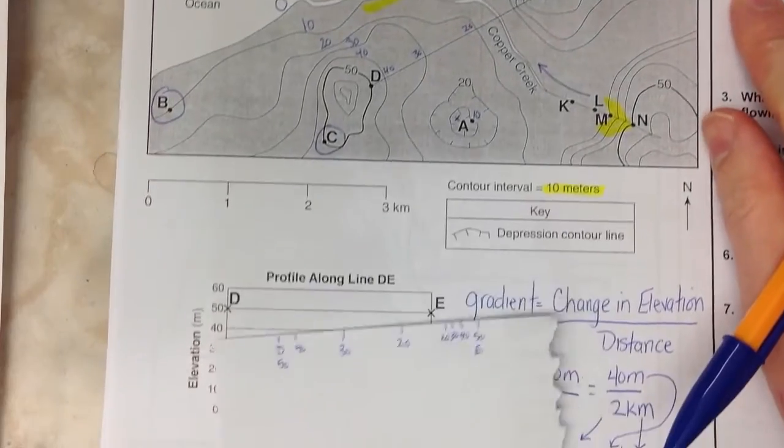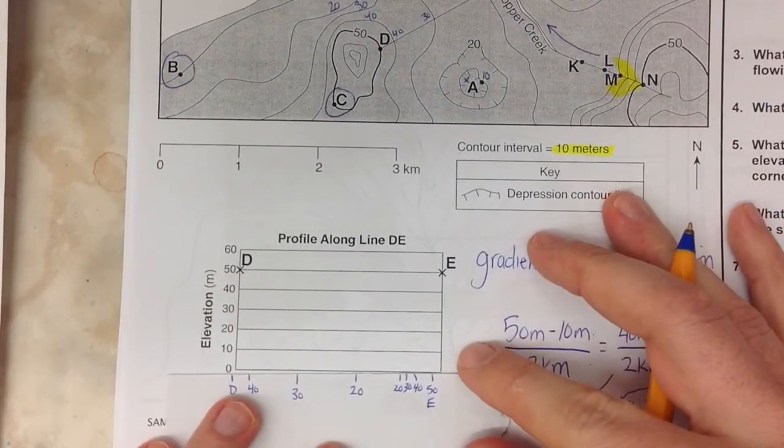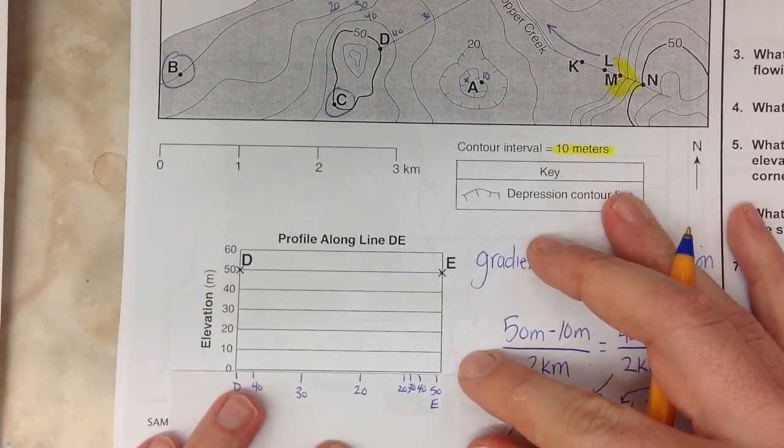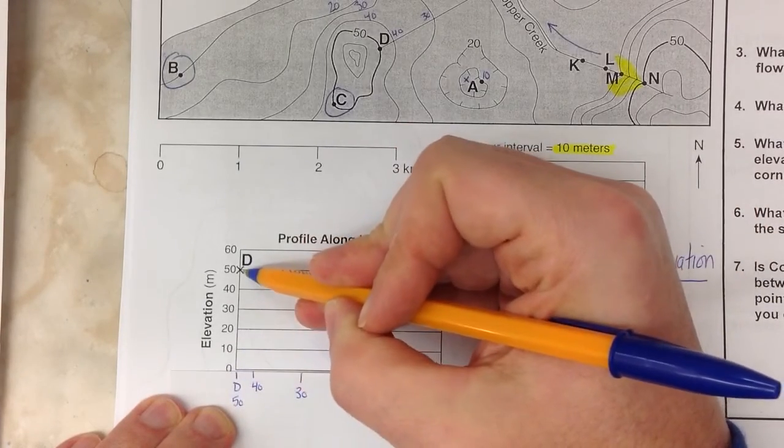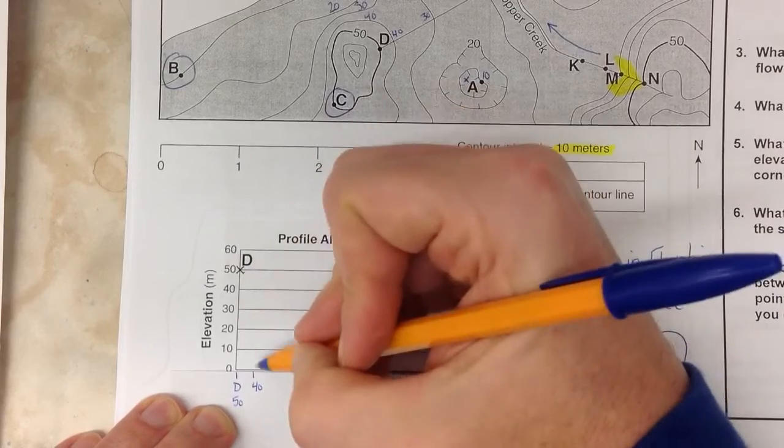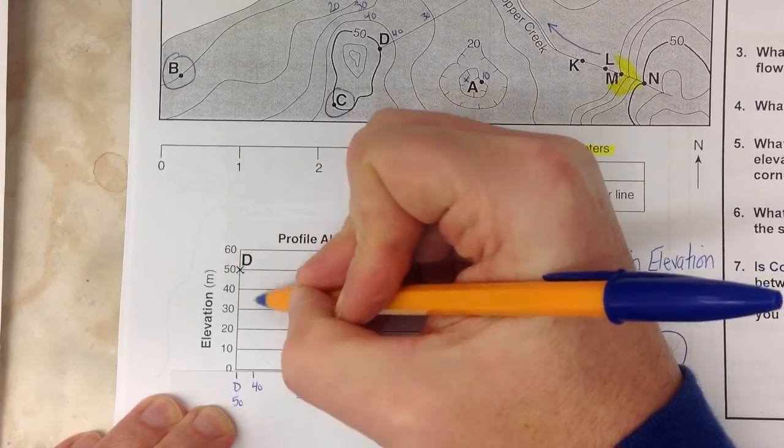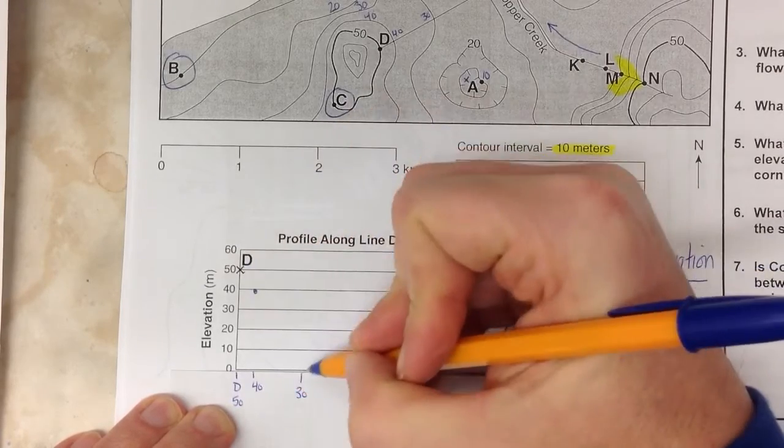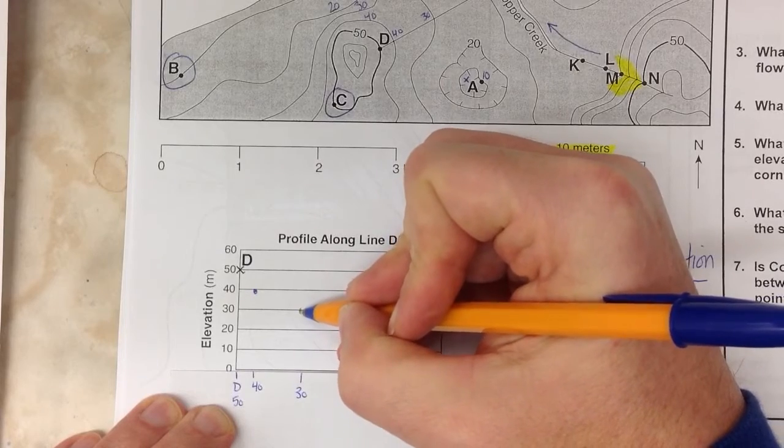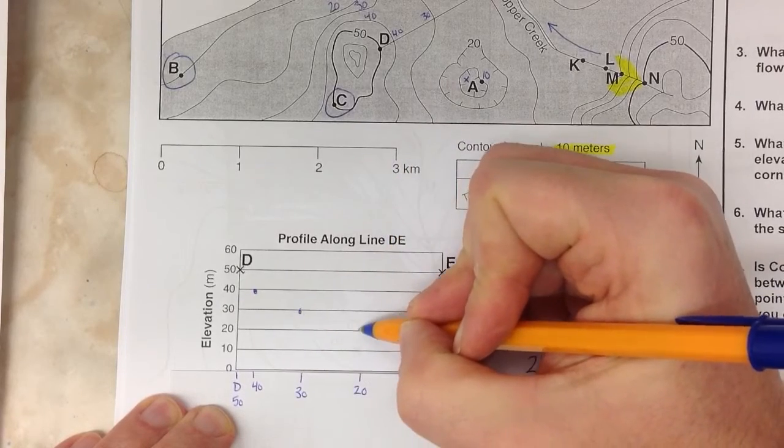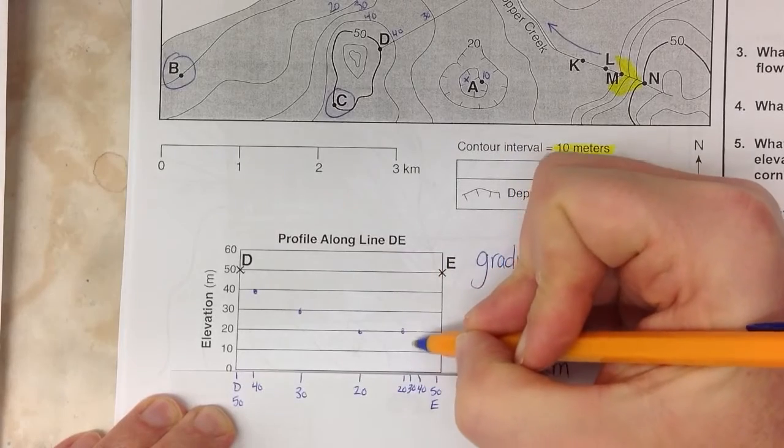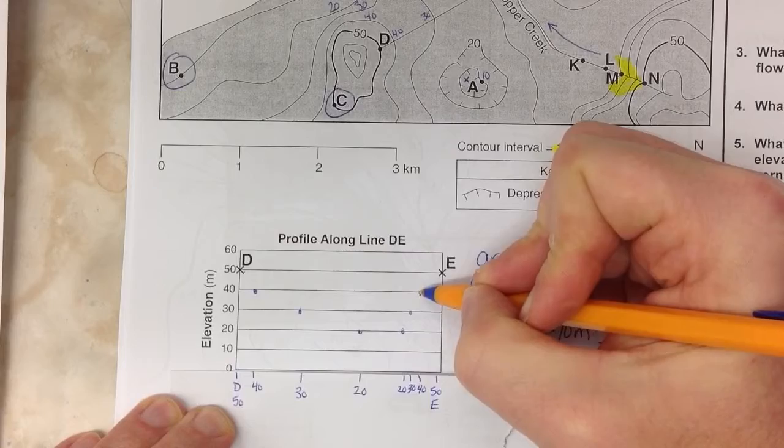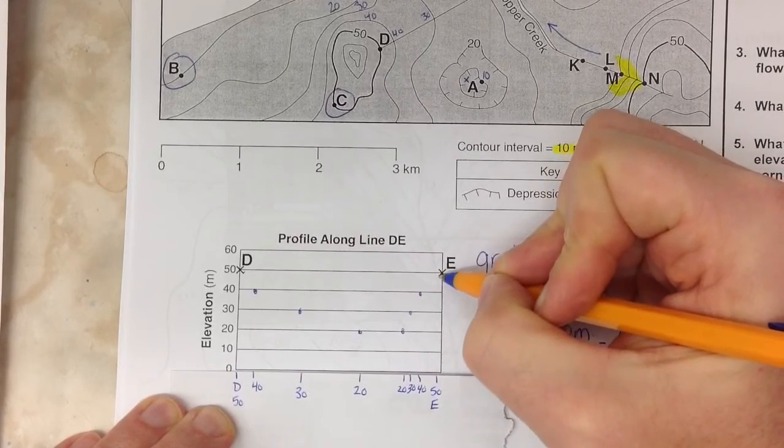I put my marks right along the bottom of my grid. And I bring those points directly straight up. Now, D is already given to me at 50. That's already produced for me. 40 mark, bring it straight up to the 40 line. 30 mark, bring it up to the 30 line. 20 mark, up to the 20 line. 20 to 20. 30 to 30. 40 to 40. 50, and then 50 is already done for me.